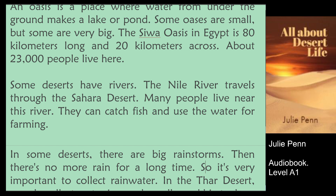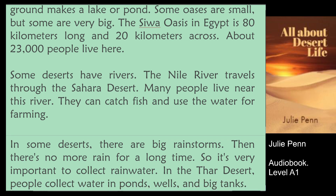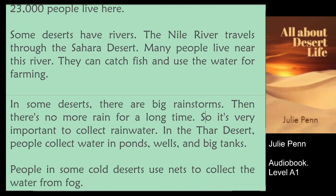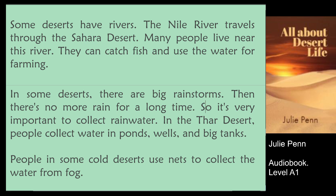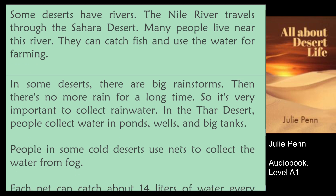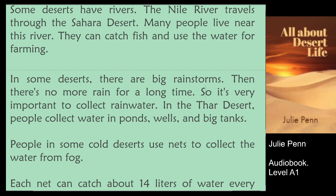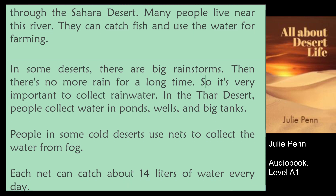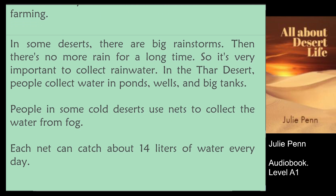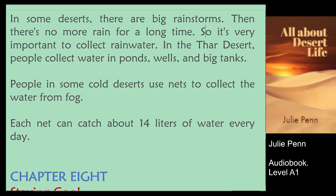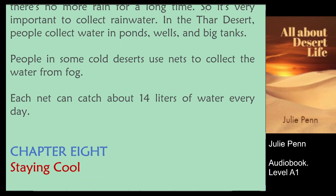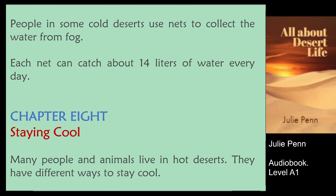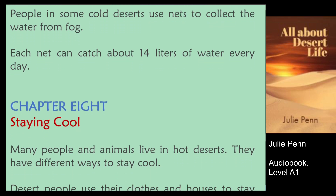Some deserts have rivers. The Nile River travels through the Sahara Desert. Many people live near this river. They can catch fish and use the water for farming. In some deserts, there are big rainstorms, then no more rain for a long time. So it's very important to collect rainwater. In the Tar Desert, people collect water in ponds, wells, and big tanks. People in some cold deserts use nets to collect the water from fog. Each net can catch about 14 liters of water every day.